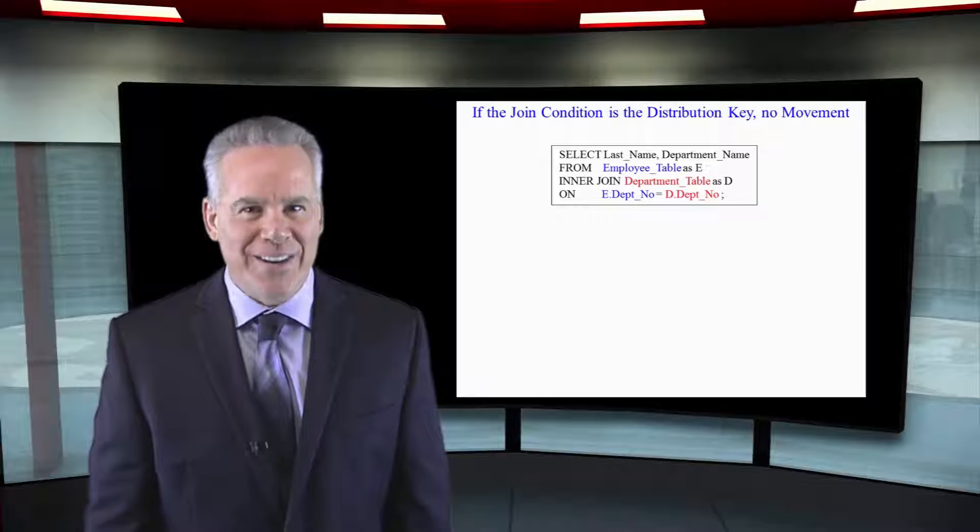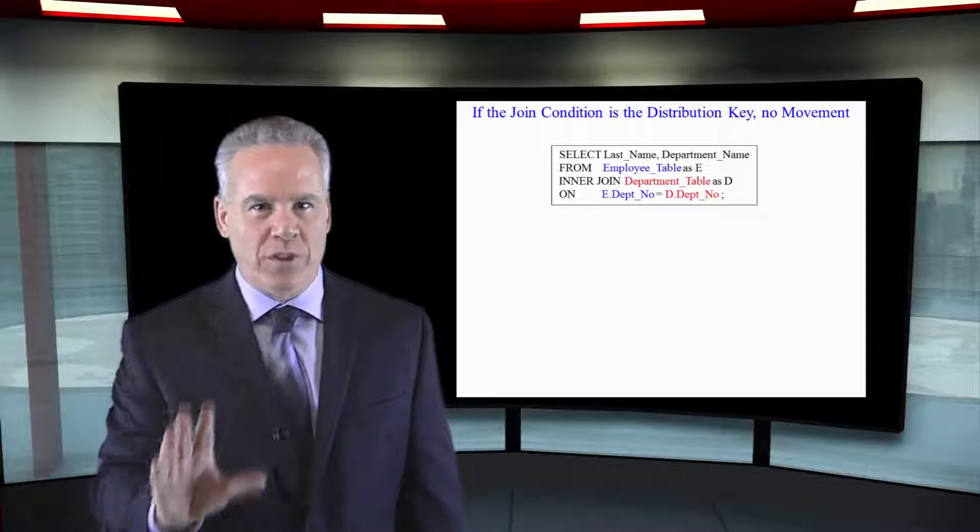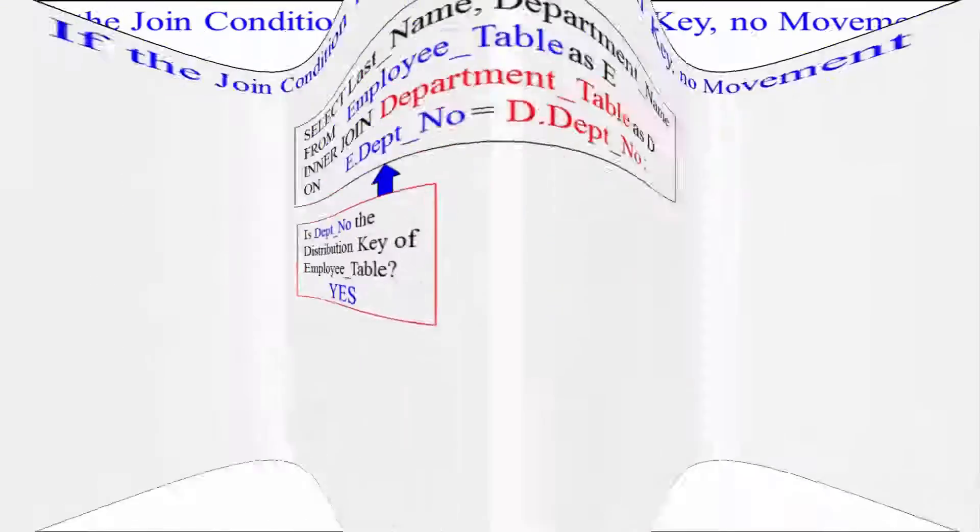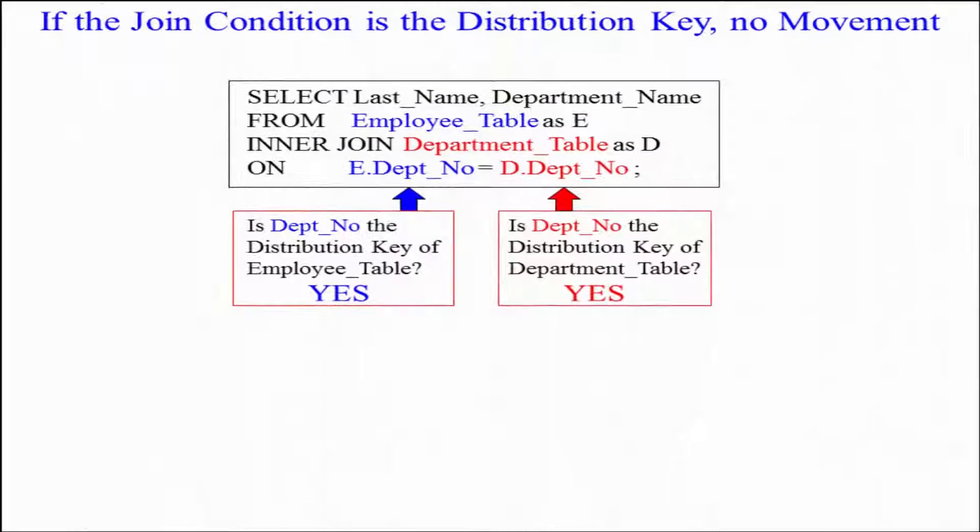Let me make this very clear with this example. In this case, the way I built these tables, the employee table's distribution key was Depno. The department table's distribution key was also Depno, and they are joining on Depno equals Depno.